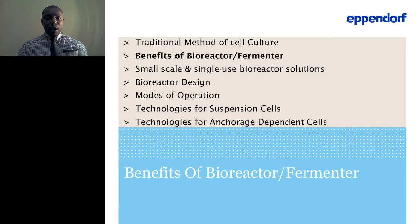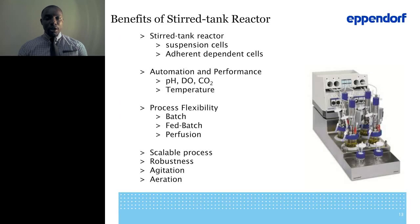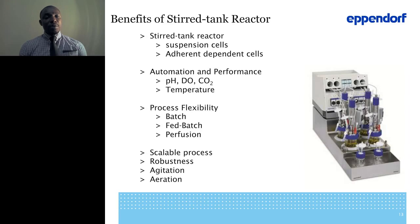The next slide covers the benefits of bioreactors, addressing the bottlenecks of shaking platforms and spinners. Shown on the right is a sample small-scale bioreactor — a stir tank reactor — which is able to accommodate both suspension cells as well as anchorage-dependent cells. It automatically controls pH, DO, CO2, and temperature, unlike the standard shake flask and CO2 incubator or spinner where you don't have any control and are relying on your buffer and media to help maintain pH.